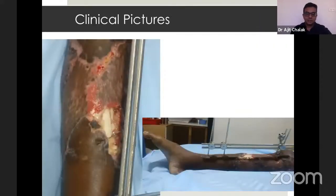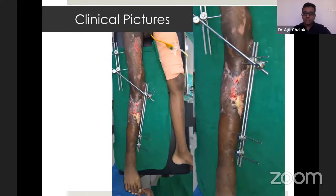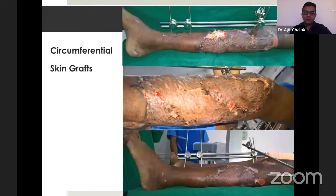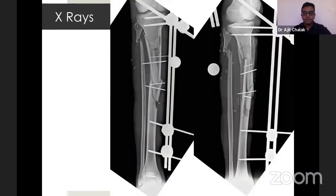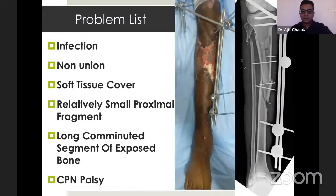These are his clinical pictures. The primary surgeon attempted to put a suture around the K-wire, which was put through the comminuted pieces of bone. You can note the circumferential skin grafts all around the proximal half of the leg. There was infection, non-union, poor soft tissue cover, a relatively small proximal fragment of the tibia, a long comminuted segment of exposed bone, and a common peroneal nerve palsy.